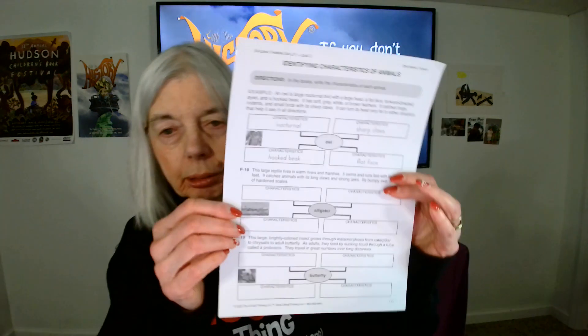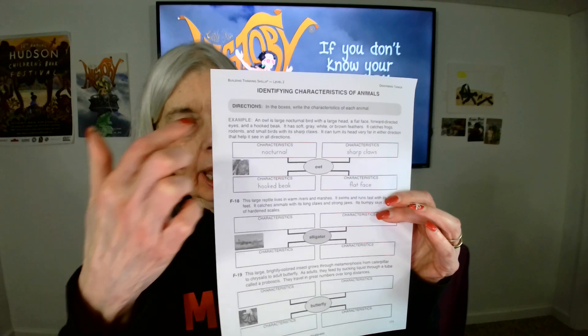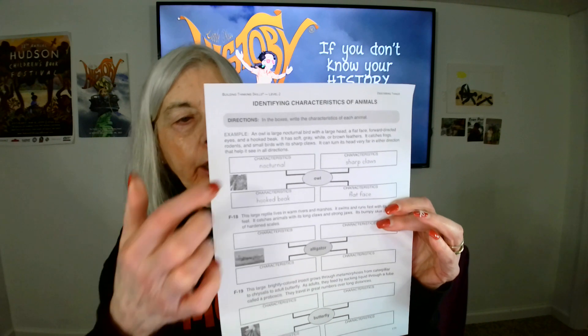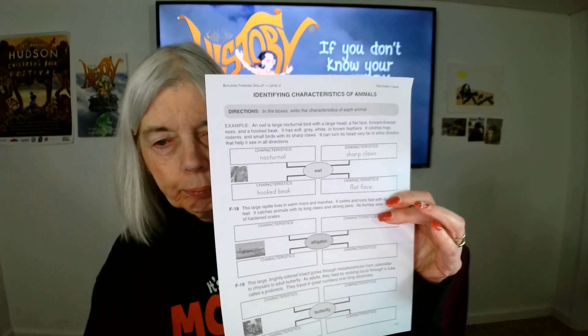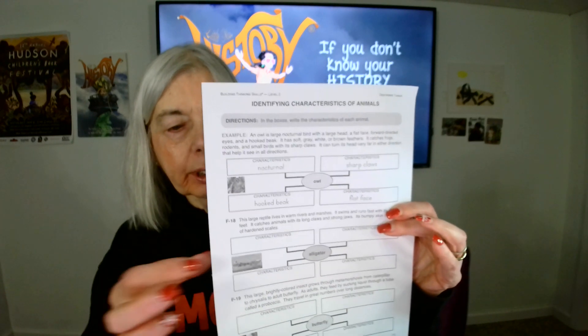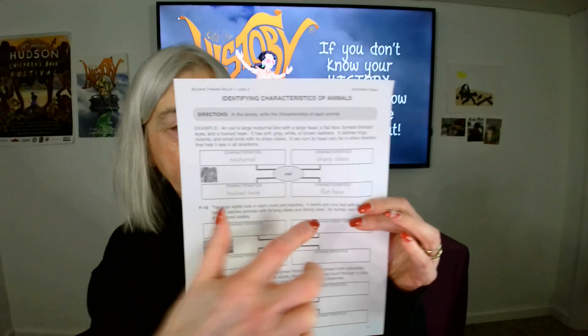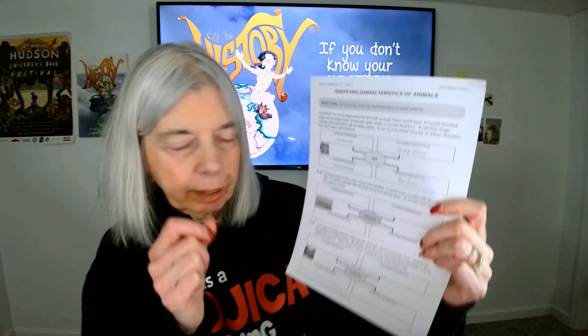Here is how we would do it. On the first worksheet, you're going to be reading the short paragraph, and then use the information in that paragraph to fill in the characteristics of the named animal. The first one is done for you. The second two, you have to figure out totally on your own — read the description, look at the name of the animal, and fill in the characteristics.